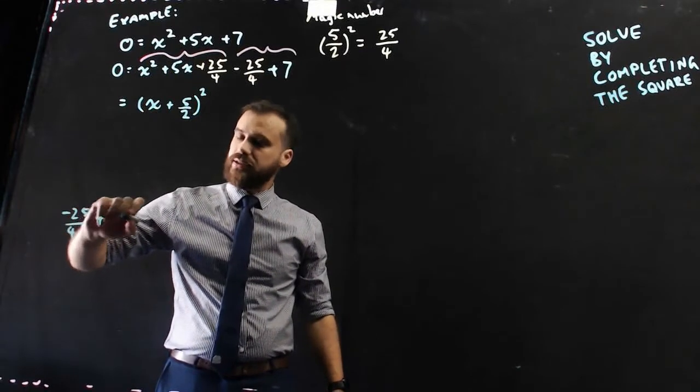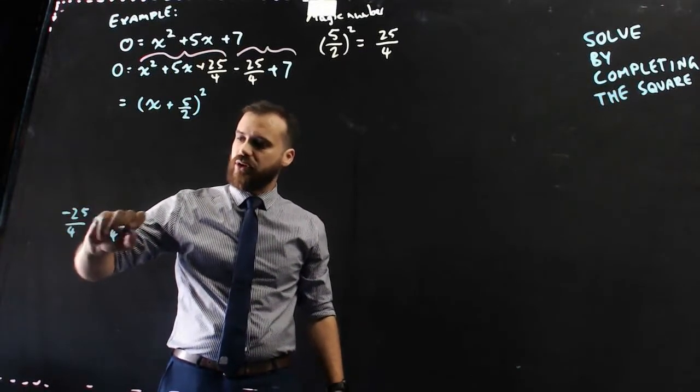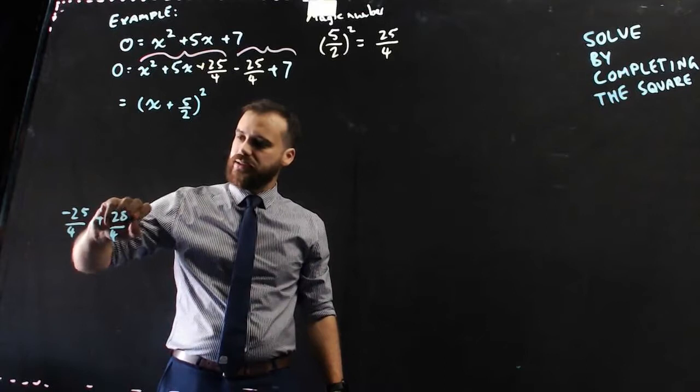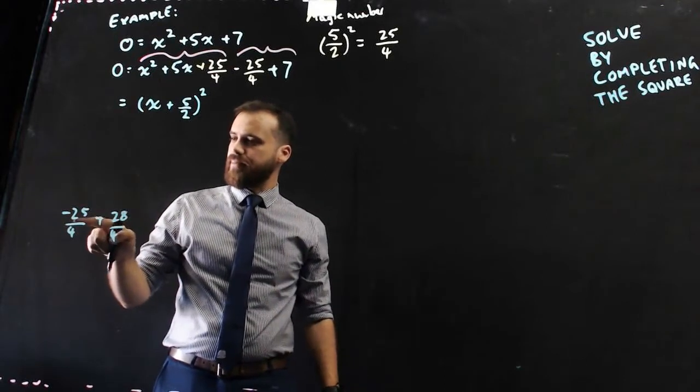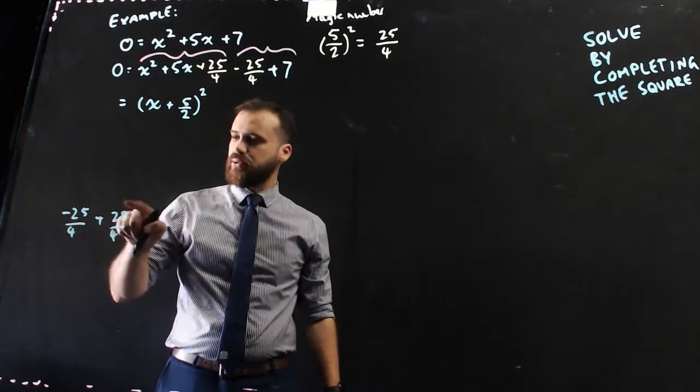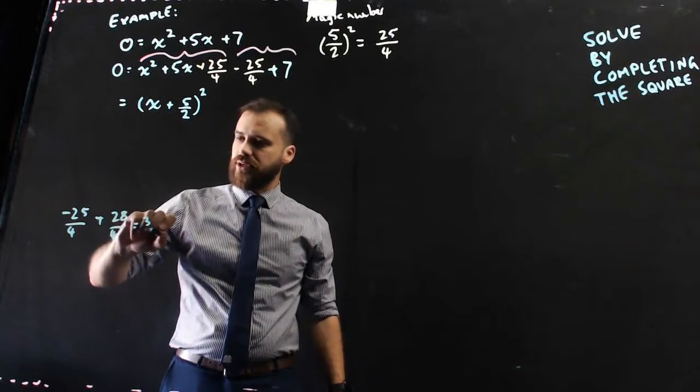plus, that's 7 over 1 or 28 over 4. So, that's going to be negative 25 over 4, plus 28 over 4, that's going to be 3 over 4.